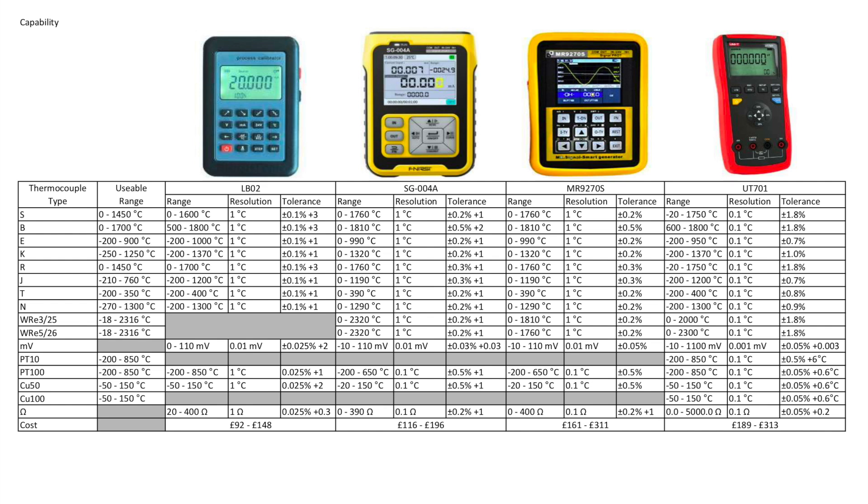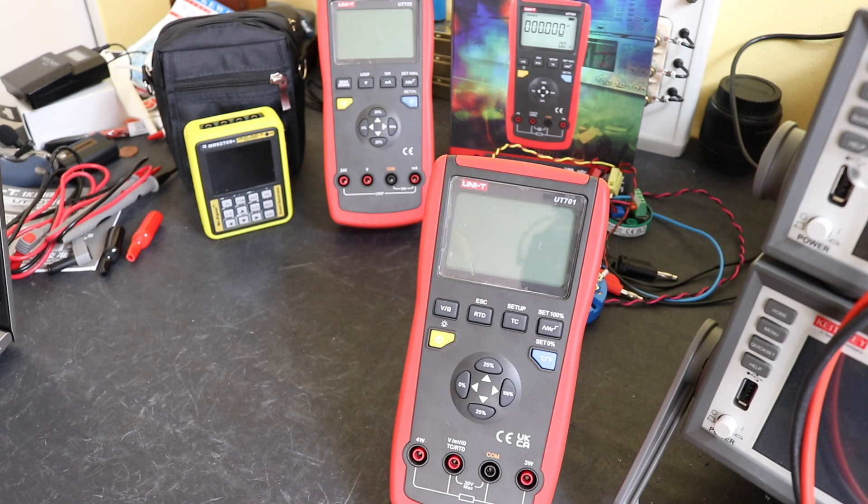Millivolt wise you can see it's pretty much the same kind of tolerance as our little process calibrator units. And again down at the RTDs you get the same kind of functionality. Still it's not quite as accurate as the LB02 with regards to resistance. But it should be better than our SG-004A and even our MR9270S on paper it should be better than those. And it does give me these other two RTDs that aren't included in the little process calibrator units, the PT10 and CU100. If you happen to deal with those kind of devices I don't deal with those so it's not that big an issue to me. But that's what its capabilities are in comparison to the little process calibrator units.